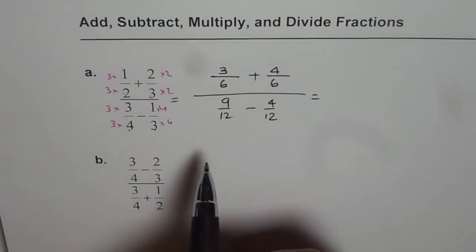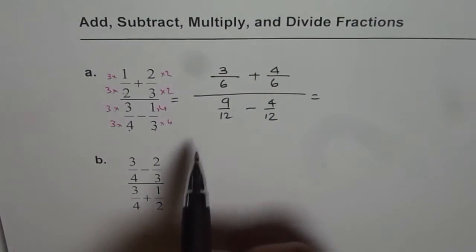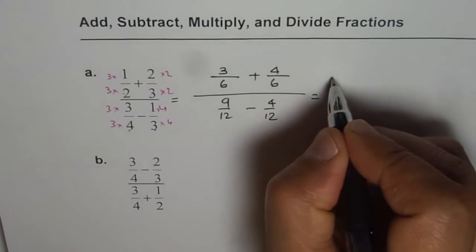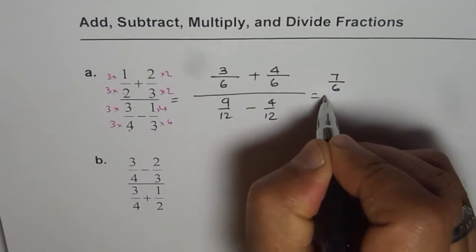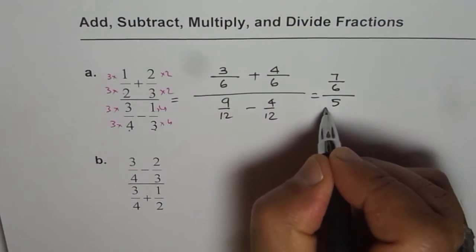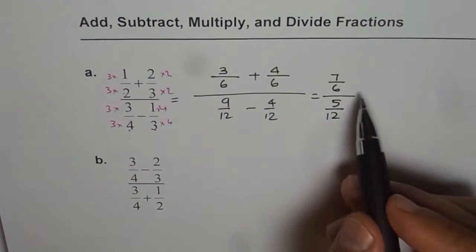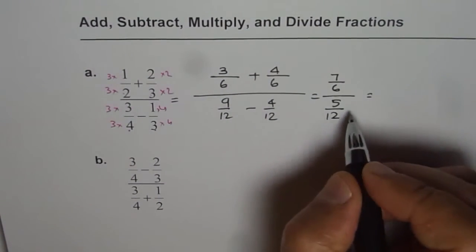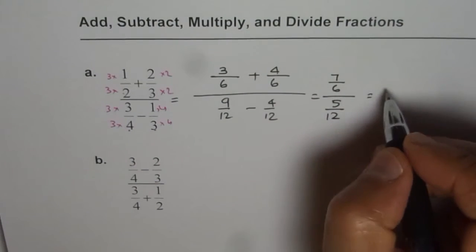Since we have common denominators, we can do addition and subtraction. 3 plus 4 is 7, so we get 7 over 6 in the numerator. 9 take away 4 is 5, 5 over 12. So we have 7 over 6 divide by 5 over 12.